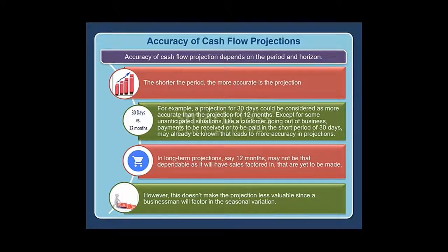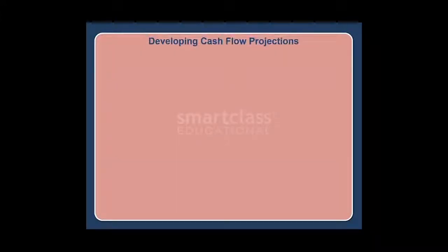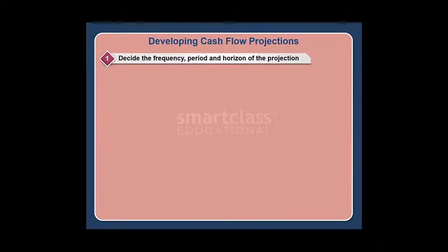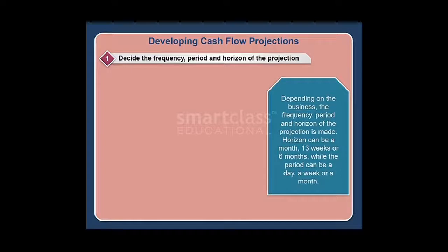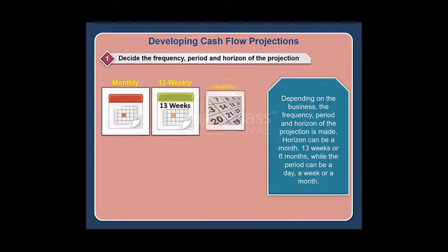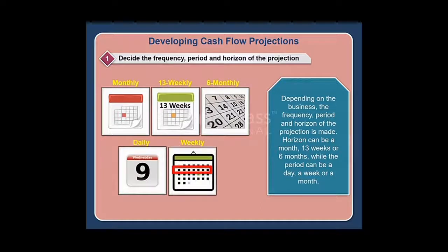Step one: decide the frequency, period, and horizon of the projection depending on the business. The horizon can be a month, 13 weeks, or six months, while the period can be a day, a week, or a month.